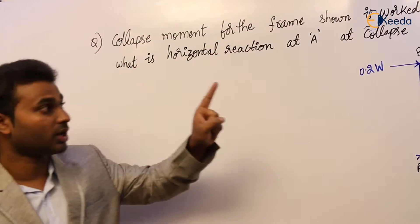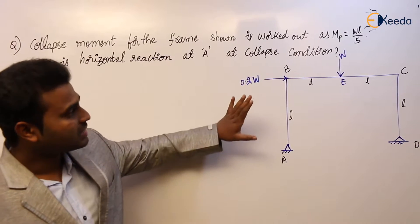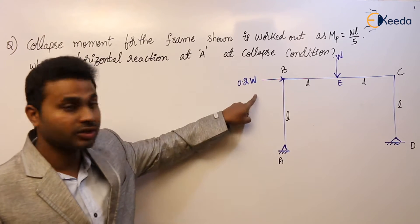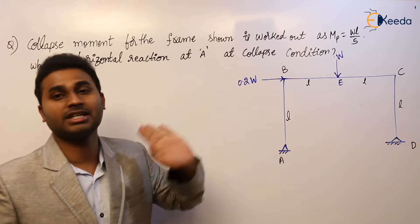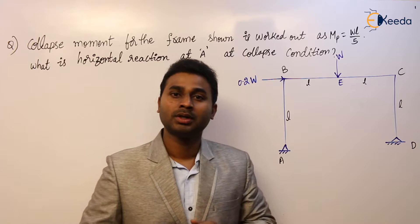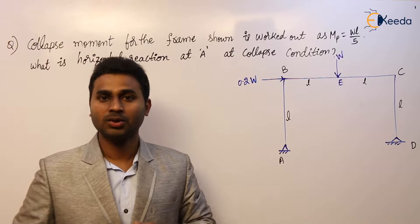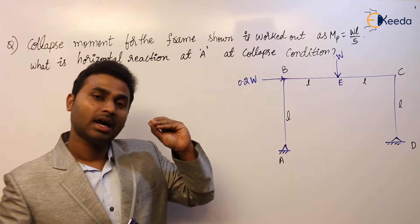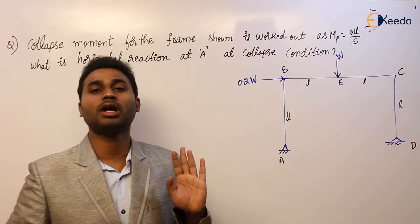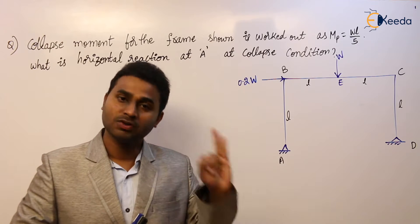Based on the collapse load, we are asked to find the horizontal reaction. Before going into this question, inspect the frame — it will sway because of the lateral load, and it will sway towards the right. Because of the vertical load, a beam mechanism will form. So in this frame, beam mechanism and sway mechanism are both possible, which means combined mechanism is also possible. Whenever combined mechanism is possible, the true collapse is due to combined mechanism.